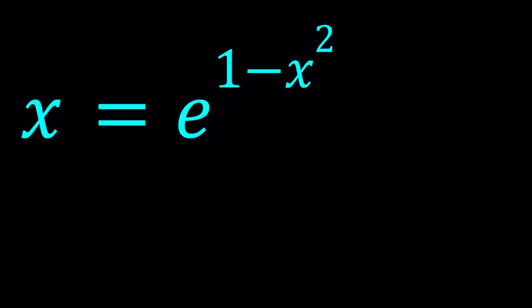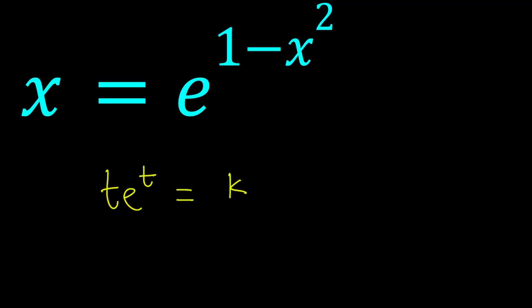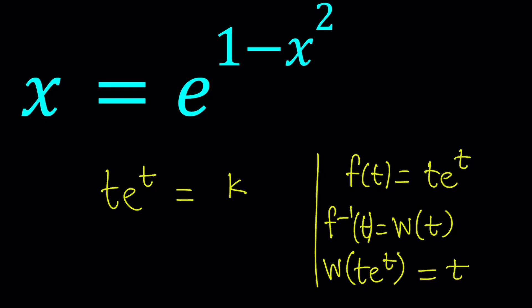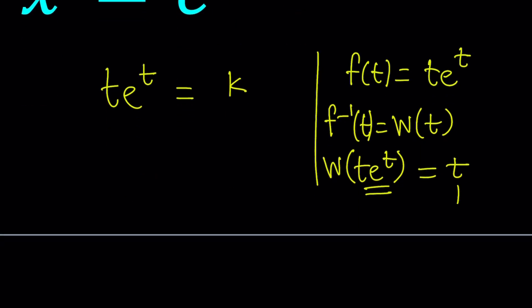If you have an equation like t times e to the power t equal to some number k and you're trying to solve for t, you can use Lambert's W-function. The function f(t) = te^t, if we invert this function on the intervals it's defined, is called Lambert's W-function. Lambert's W takes te^t and turns it into t. When you have a product like this, the output is going to be just a single t.